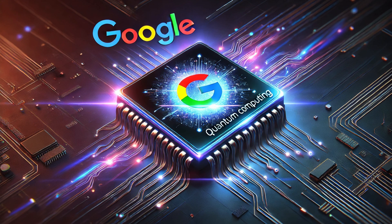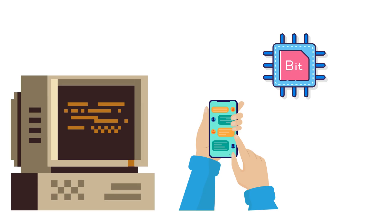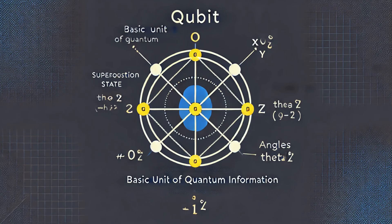At the heart of quantum computing are these things called qubits. Qubits are the quantum version of bits, which are the fundamental units of information in classical computers — our laptops and phones all use bits. A bit can be either a zero or a one, like an on or off switch.